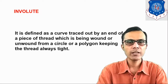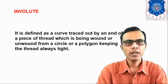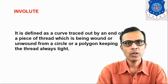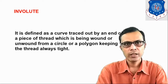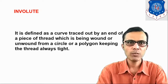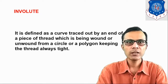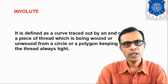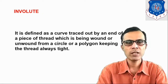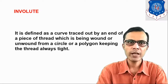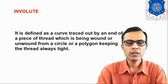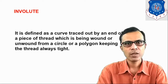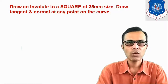Involute is defined as a curve generated by the end of a piece of thread which is being wound or unwound from a circle or a polygon. When any string or thread is wound or unwound from a circle or polygon, progressively its length is increased or decreased. If wound, its length decreases; if unwound, its length increases. Let us now see the procedure to draw this type of curve.